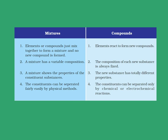This slide summarizes the differences between mixtures and compounds. In mixtures, elements or compounds just mix together and no new compound is formed, whereas in compounds, elements react to form new compounds. A mixture has a variable composition, whereas the composition of each compound is always fixed. A mixture shows the properties of its constituent substances, whereas a compound has totally different properties. Finally, the constituents of a mixture can be separated fairly easily by physical methods, whereas in compounds, chemical or electrochemical reactions have to be applied to separate the constituents.